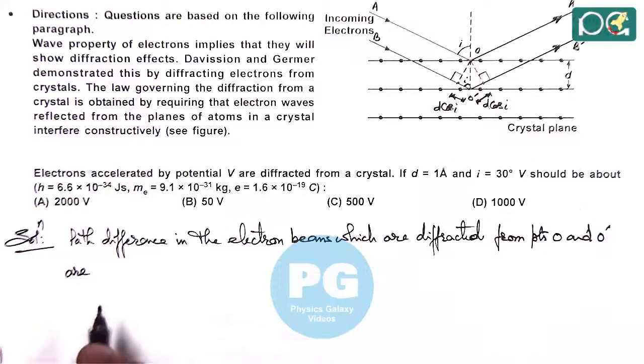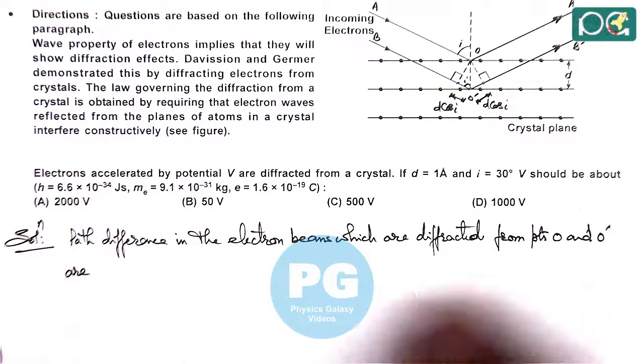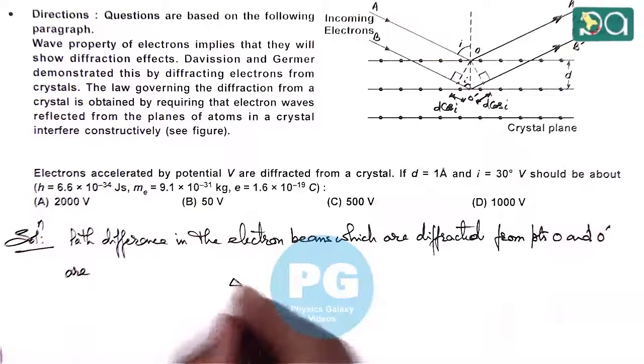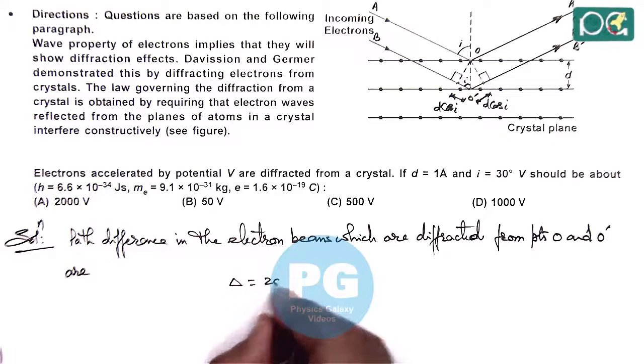So in this situation we can say the path difference between the two waves can be given as delta is equal to 2D cos I.